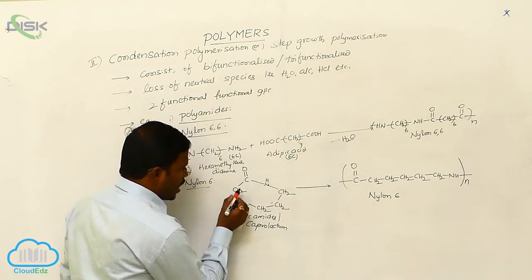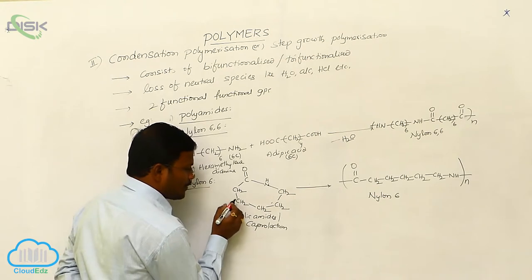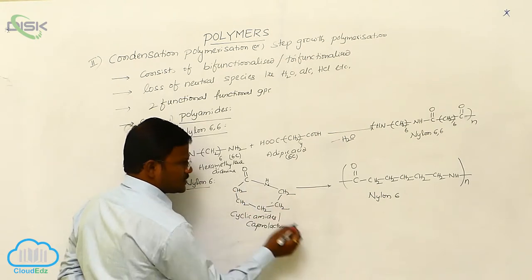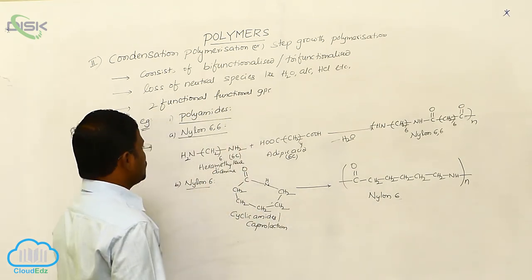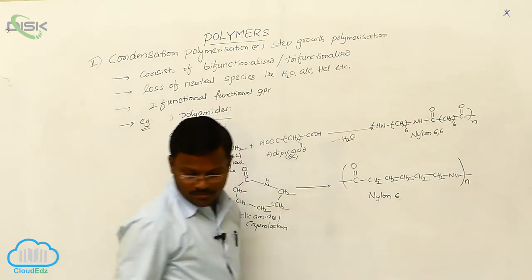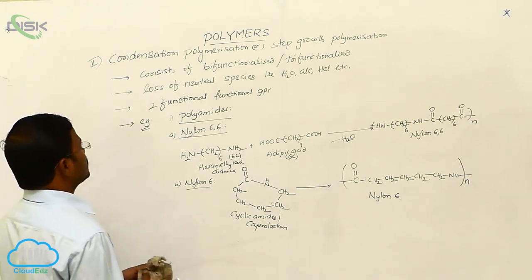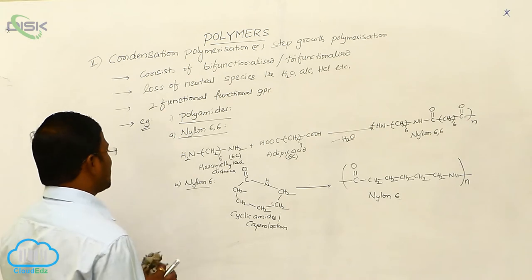The resulting compound is called nylon 6. Why? Because how many carbon species are present in the monomer? 1, 2, 3, 4, 5, 6. Hence, it is called nylon 6. These are the examples which stand for condensation polymerization.